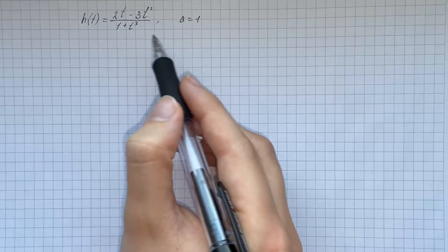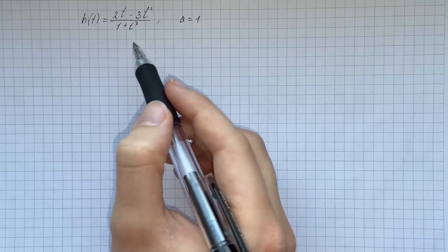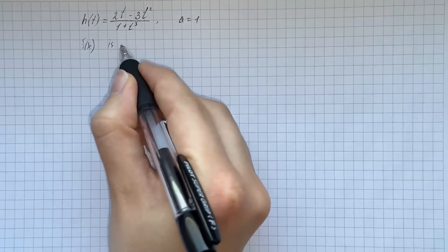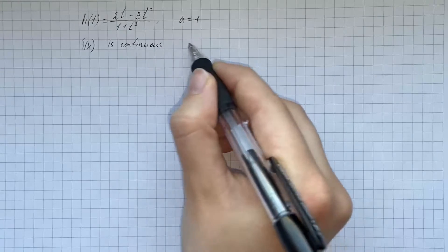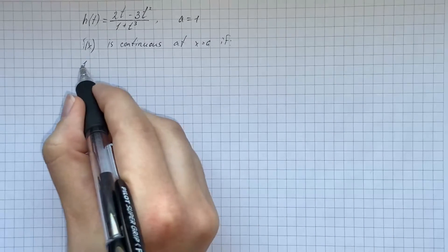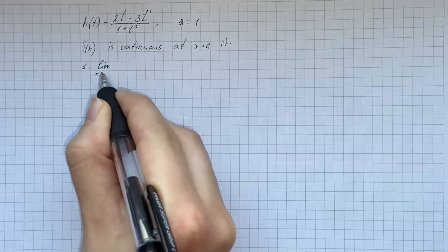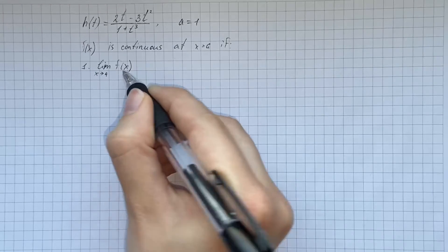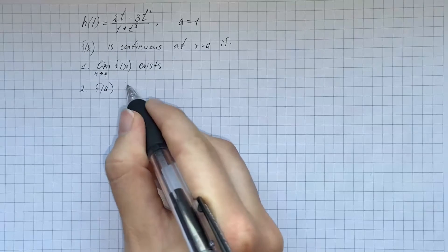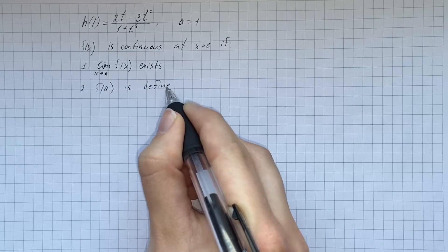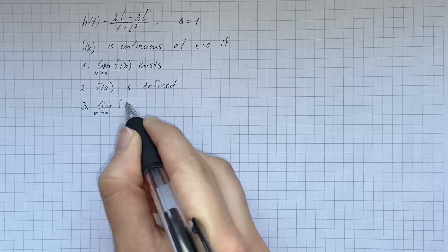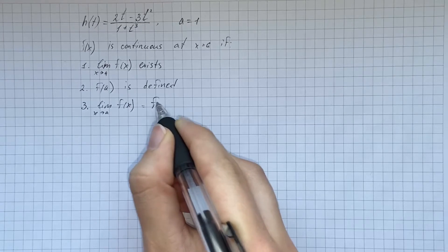We have to find whether the function is continuous at the given number a. The definition of continuity is that a real-valued function f of x is said to be continuous at x equals a if three conditions are satisfied: first, the limit as x approaches a of f of x exists; second, f evaluated at a is defined; and third, the limit as x tends to a of f of x equals f evaluated at a.